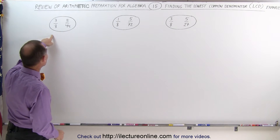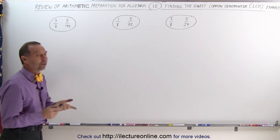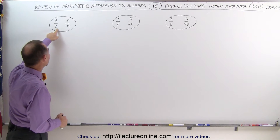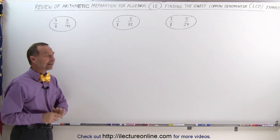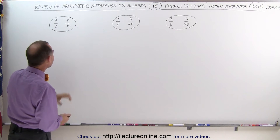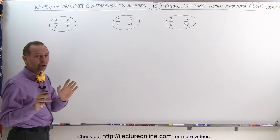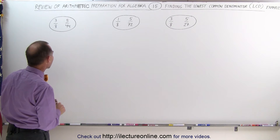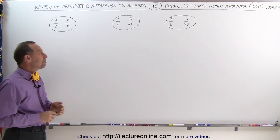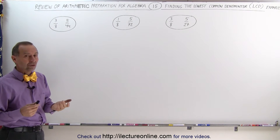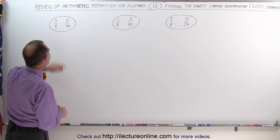The first example we have 3/8ths and 5/44ths. The first thing we want to do is to make sure that the smallest denominator does not fit evenly into the largest denominator. In this case, that's not the case. They're not prime numbers, so we definitely don't want to multiply the two denominators together. They're both even, which means they share a prime number as a factor.